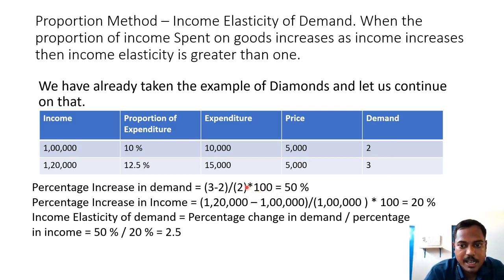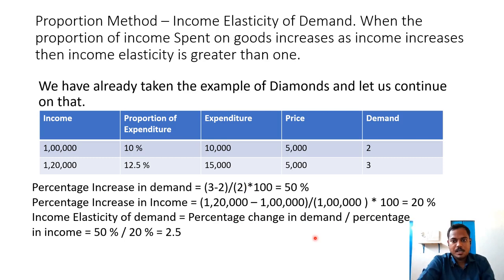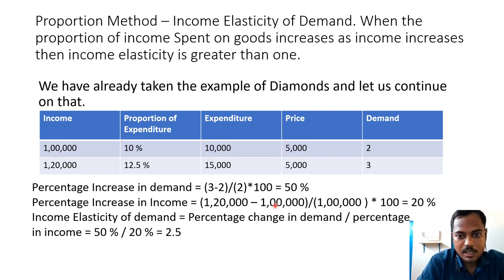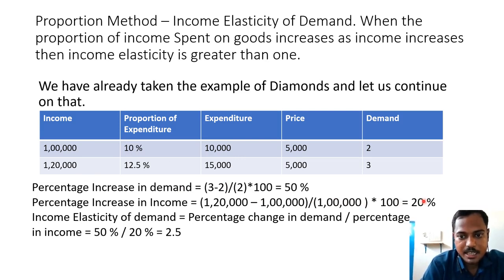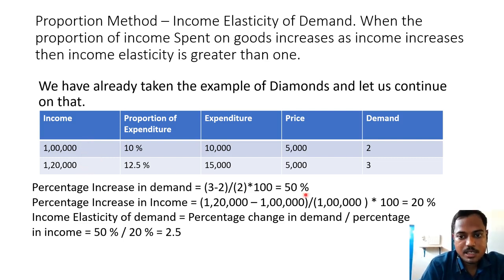For calculating income elasticity of demand, the formula is percentage change in demand divided by percentage change in income. The income increased from Rs. 1 lakh to Rs. 1,20,000 — that is (1,20,000 − 1,00,000) ÷ 1,00,000 × 100 = 20%. So the percentage increase in income is 20%.